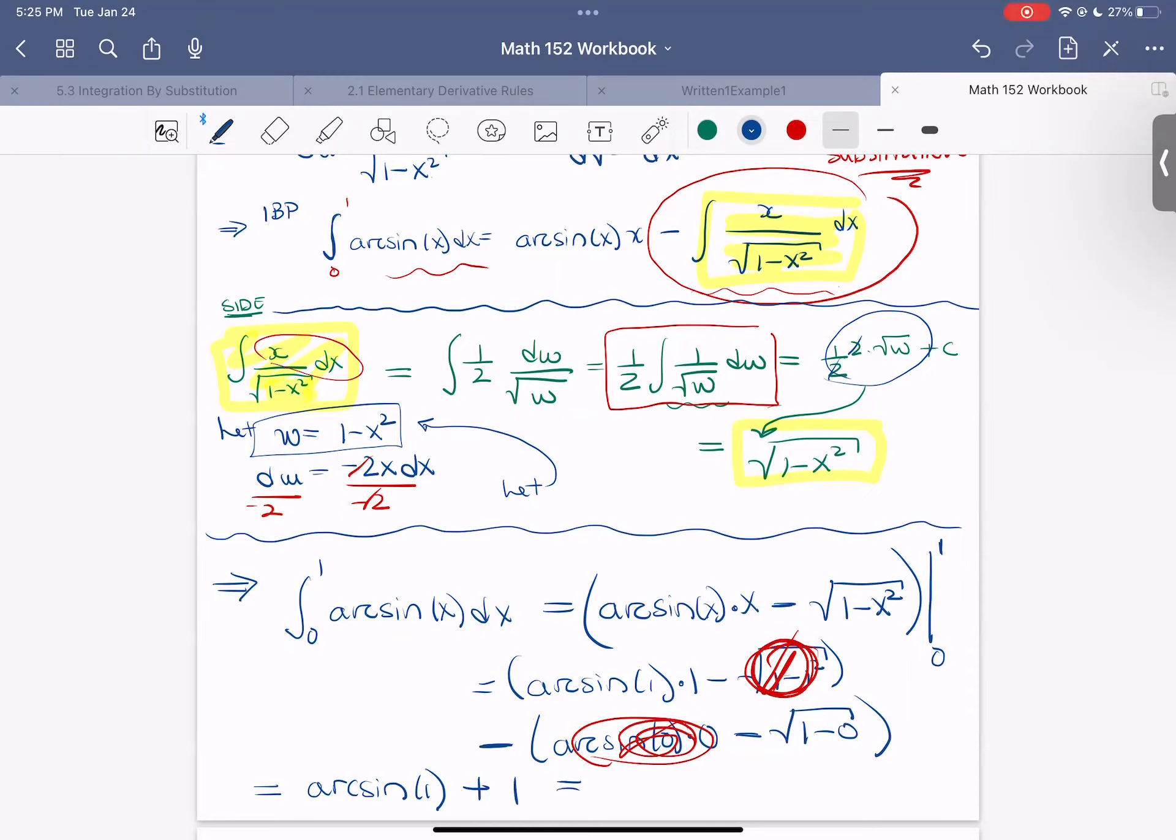And now we need to recall arc sine of 1. So that means what angle gives us the sine of 1? That's pi over 2. So this just becomes pi over 2 plus 1.